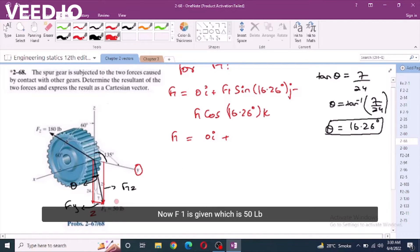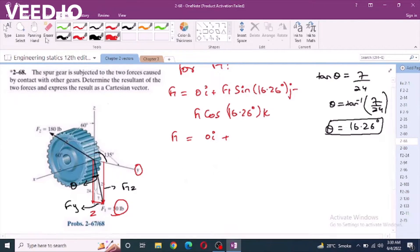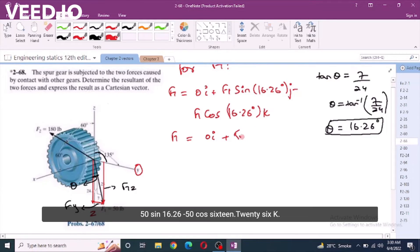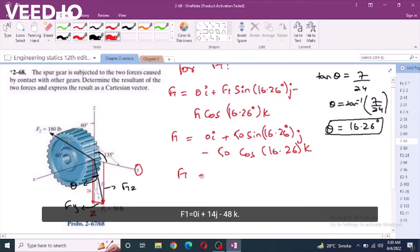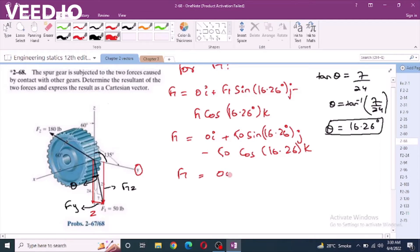50 sin 16.26 minus 50 cos 16.26 k. F1 equals 0i plus 14j minus 48k.